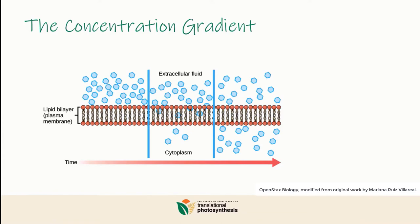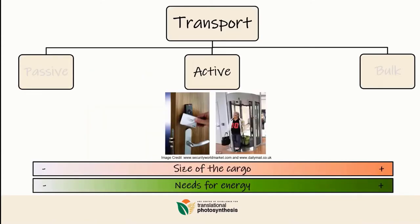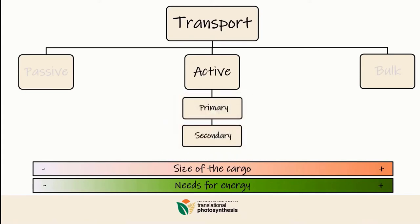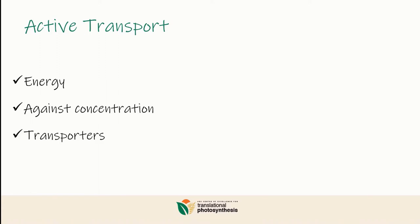You will never see all the molecules going from one side to the other just by diffusion — but that's when active transport comes into action. We distinguish two types of active transport: primary and secondary. Both require energy to move molecules against the concentration gradient, and they always need the help of specialized proteins commonly called transporters.